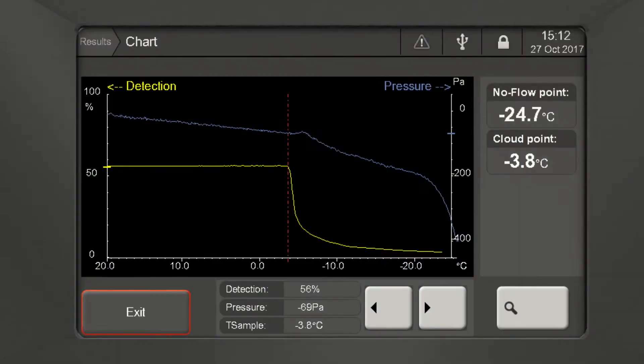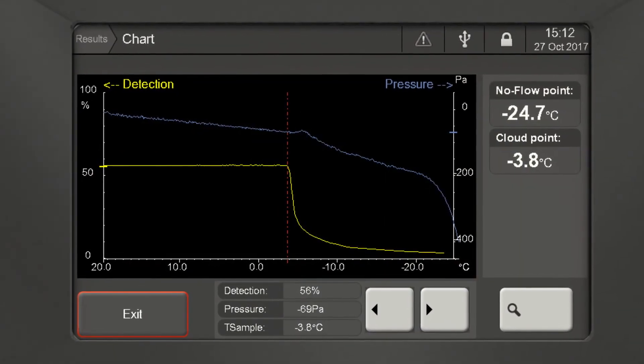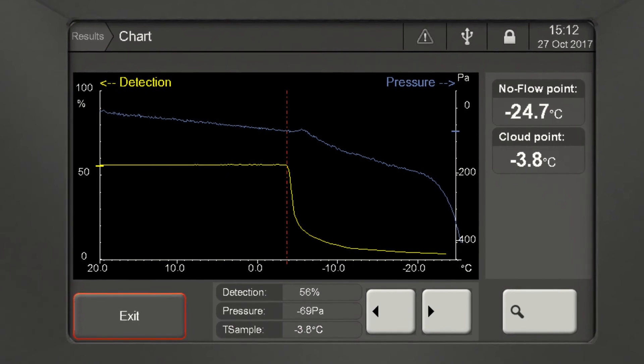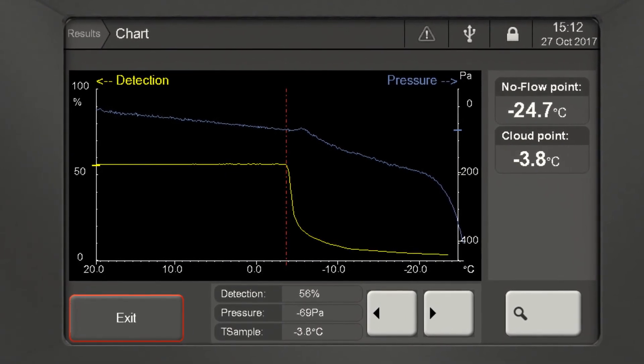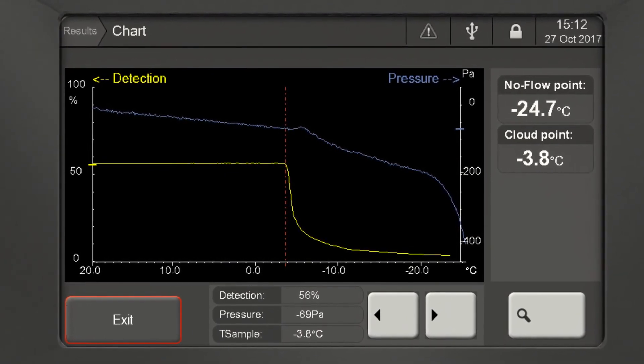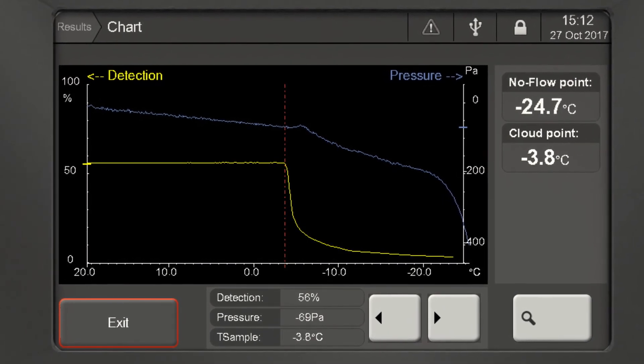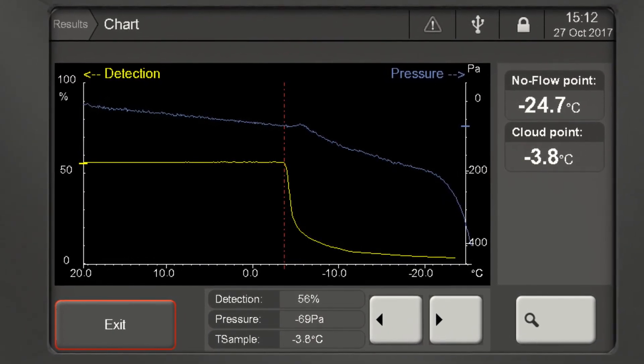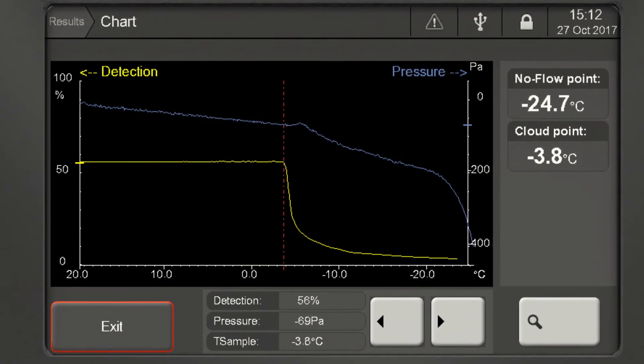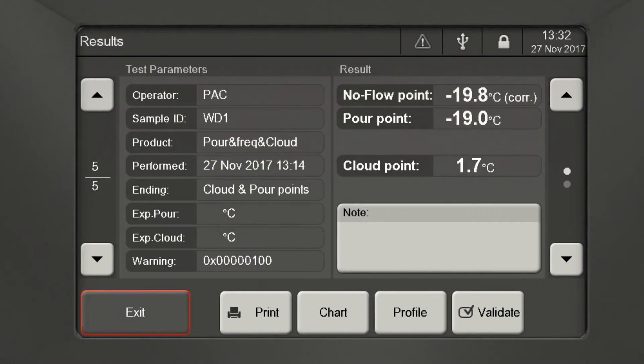A typical chart of the optical signal and the pressure detection sensor looks like this. The cloud point is detected when a steep drop in the optical signal is recorded. The no flow point is detected when the rate of pressure changes in the sample vial drops precipitously and reaches an internal pressure change threshold.